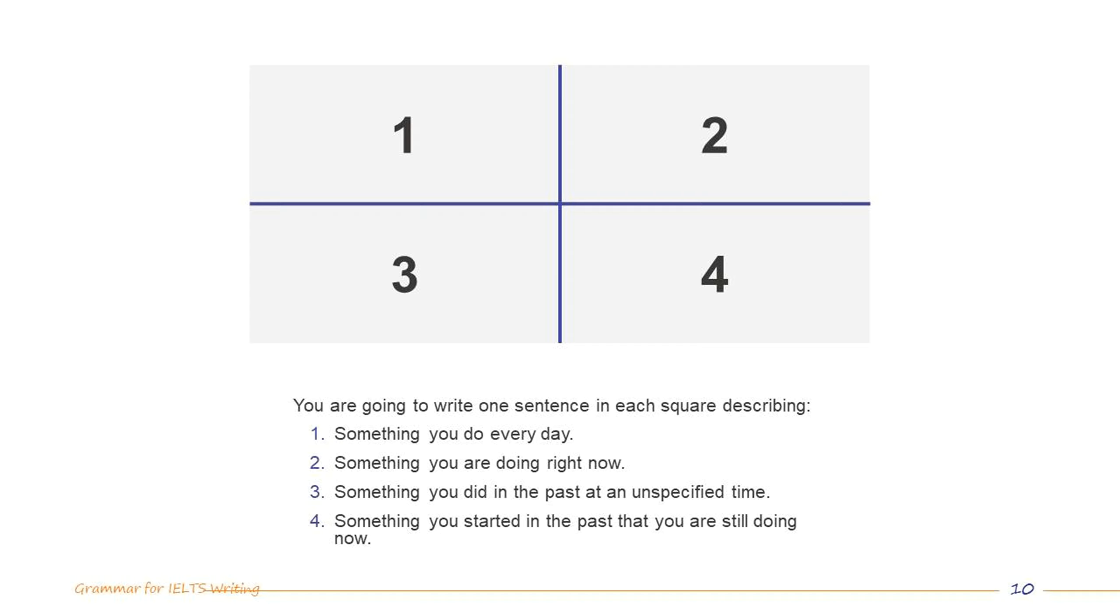You are going to write one sentence in each square describing: number one, something you do every day; number two, something you are doing right now; number three, something you did in the past at an unspecified time; and number four, something you started in the past that you are still doing now.